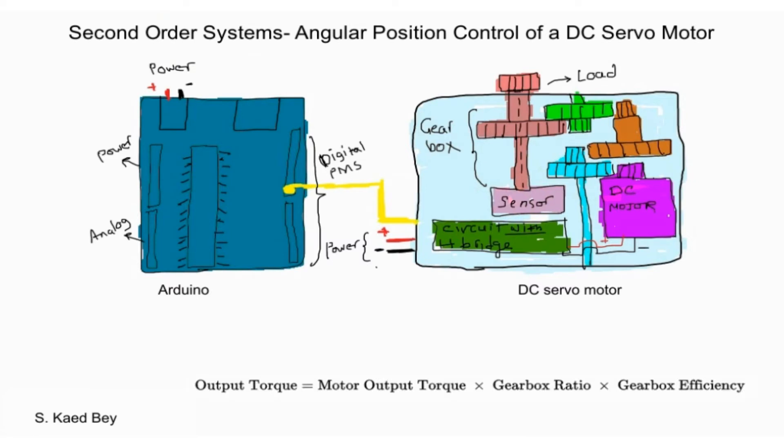You can also calculate the output torque at the load using the gearbox ratio. For example, the DC motor output torque multiplied by the gearbox ratio multiplied by the gearbox efficiency will give you the output torque at the load. So if your DC motor output torque is 5 kg cm and the gearbox ratio is 10 to 1 and the gearbox efficiency is 90%, then this will lead roughly to around an output torque of 45 kg cm.